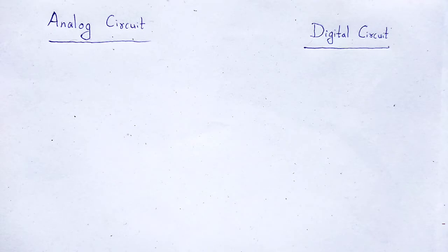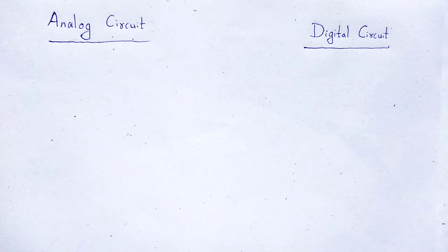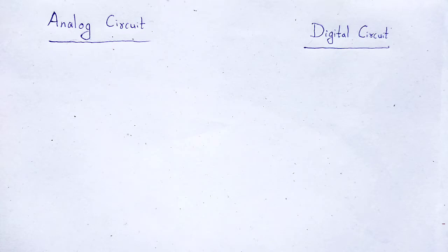In the world of electronics, the entire circuit system is divided into two categories. One is analog circuit and another one is digital circuit. The key difference between analog circuit and digital circuit is that the analog circuit works on the basis of analog signals, whereas the digital circuit works on the basis of digital signals.